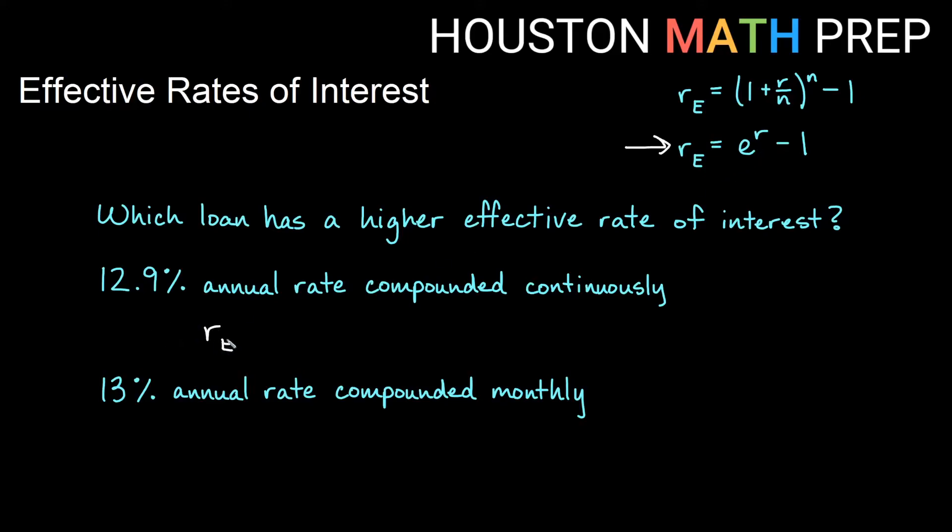So here my effective rate is going to equal e to the 12.9% as a decimal would be 0.129 minus 1. And let's go ahead and round that to three places. If we round to three places we'll actually get an effective rate of 13.769%. So you can see we get a bit more, not quite a percent extra, but compounding continuously gives us close to an extra percent above the 12.9 quoted to us.